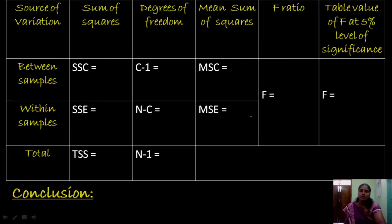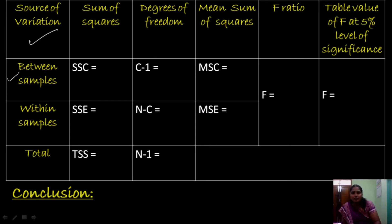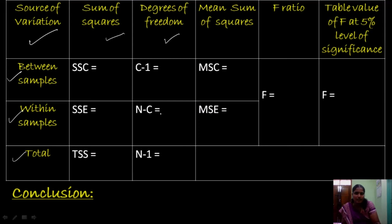Let us now move on to the one-way ANOVA table. The first column represents source of variation — between samples, within samples and total. The second column is sum of squares. The next columns represent degrees of freedom: C minus 1, where C is the total number of columns, which is 3. Capital N is total number of observations, which is 15. The last columns are mean square — MSC and MSE — calculated based on these values, and then the F ratio compared with the table value.